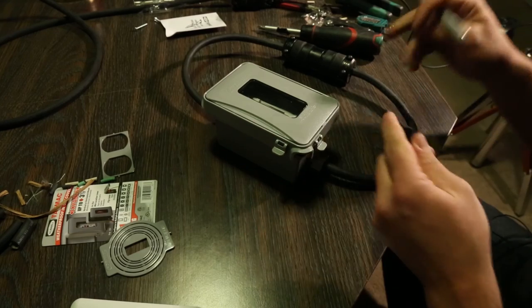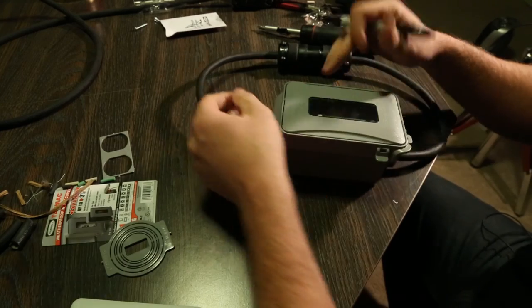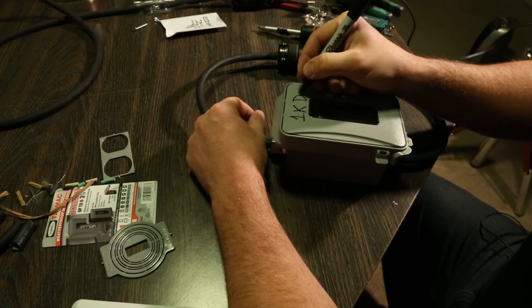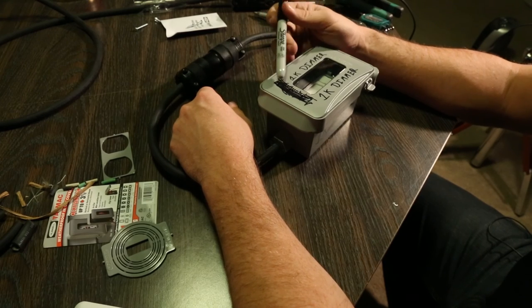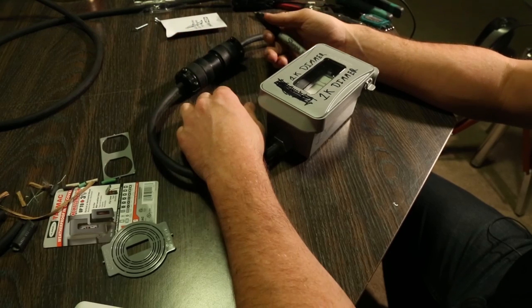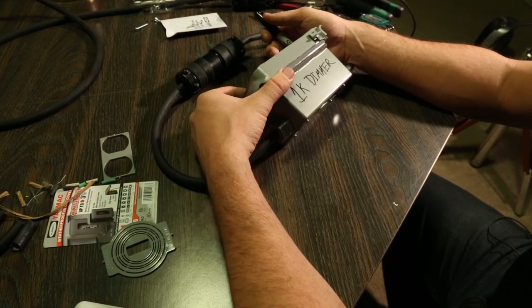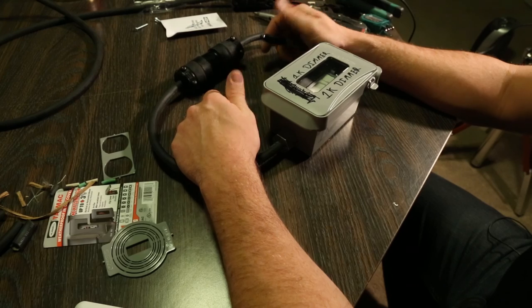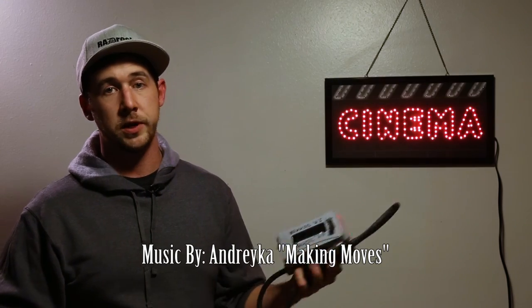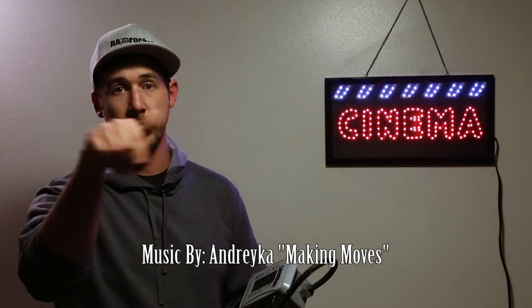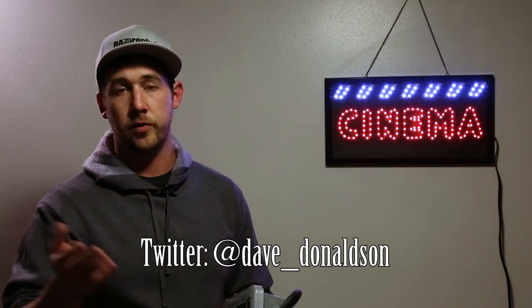Last but not least, we're going to actually label it 1K dimmer, or you could put 1000 watt dimmer. I mean, 1K is kind of the industry standard that I've heard kind of over and over again, but that's kind of how I've labeled it as 1K dimmer. And I think anybody who would go into this box would understand this is for 1000 Watts. If you liked this build, please like comment and subscribe. And if you just want to send me a message, you can follow me on my Twitter here. And I'll see you on the next one.